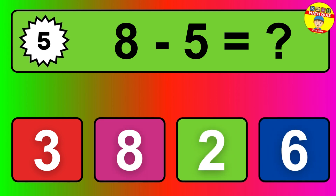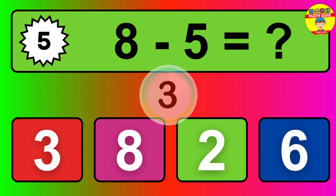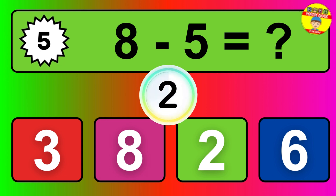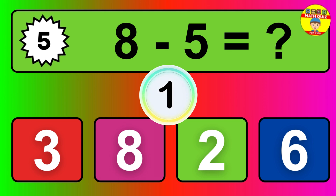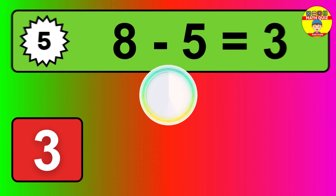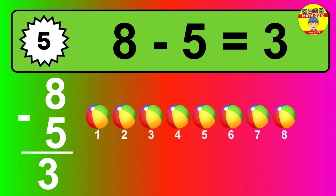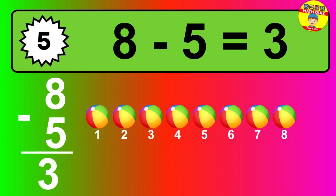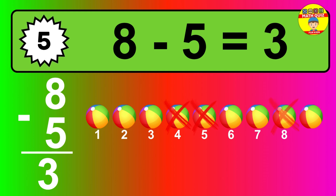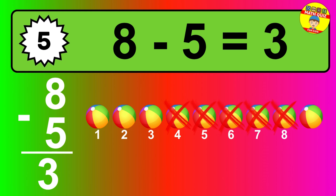Question 5. 8 minus 5 equals what? So the answer is 8 minus 5 is 3. Let's count it: 1, 2, 3.